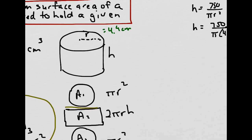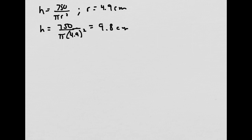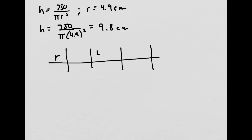But we have to ask ourselves: is this actually a minimum? Taking the derivative and setting it equal to 0 gives us either a max or a min, so we need to verify that these dimensions correspond to minimum surface area. To do that, let's take some test points to the left and right of our value of 4.9. We'll use a radius of 1 to the left and a radius of 10 to the right.